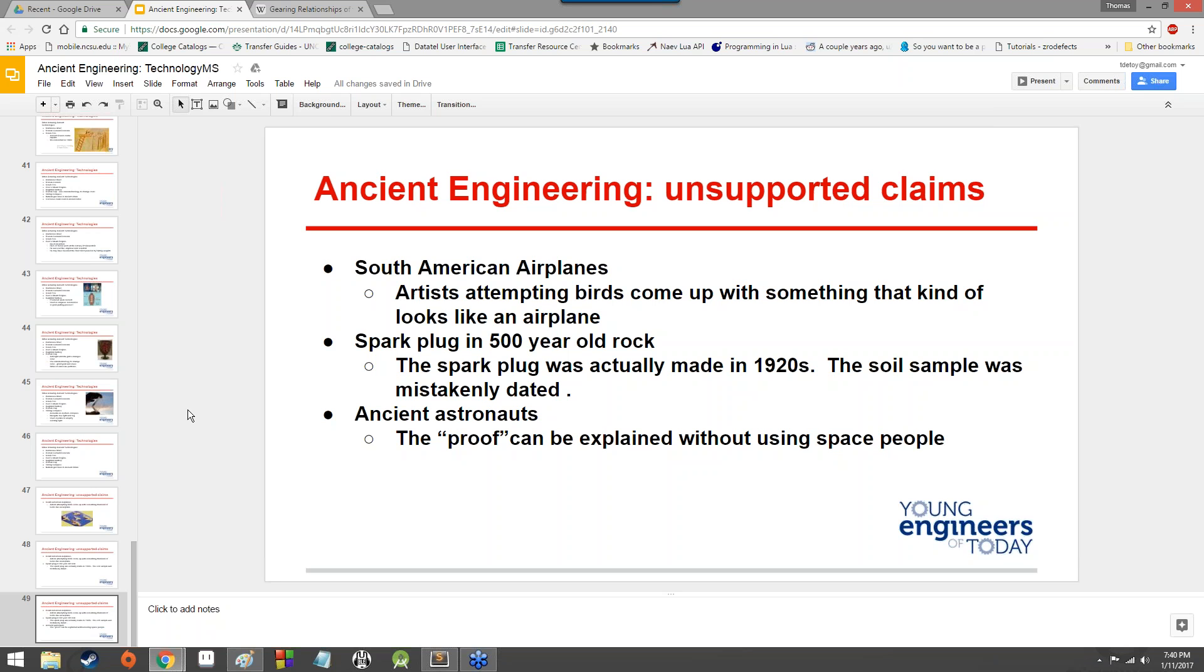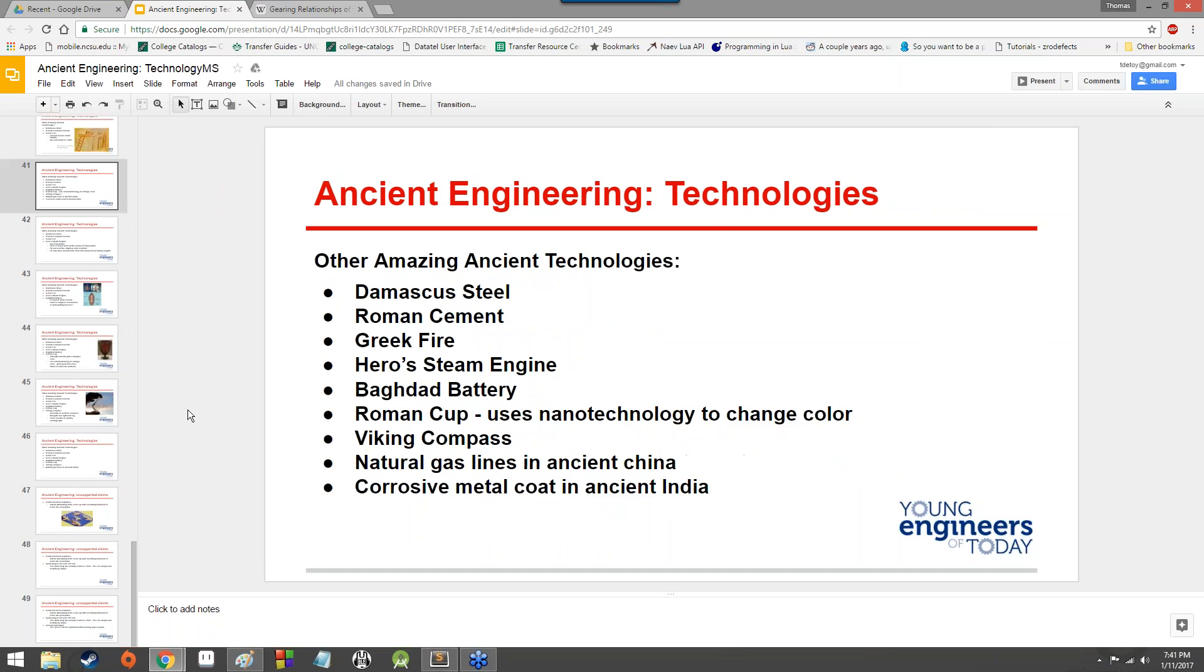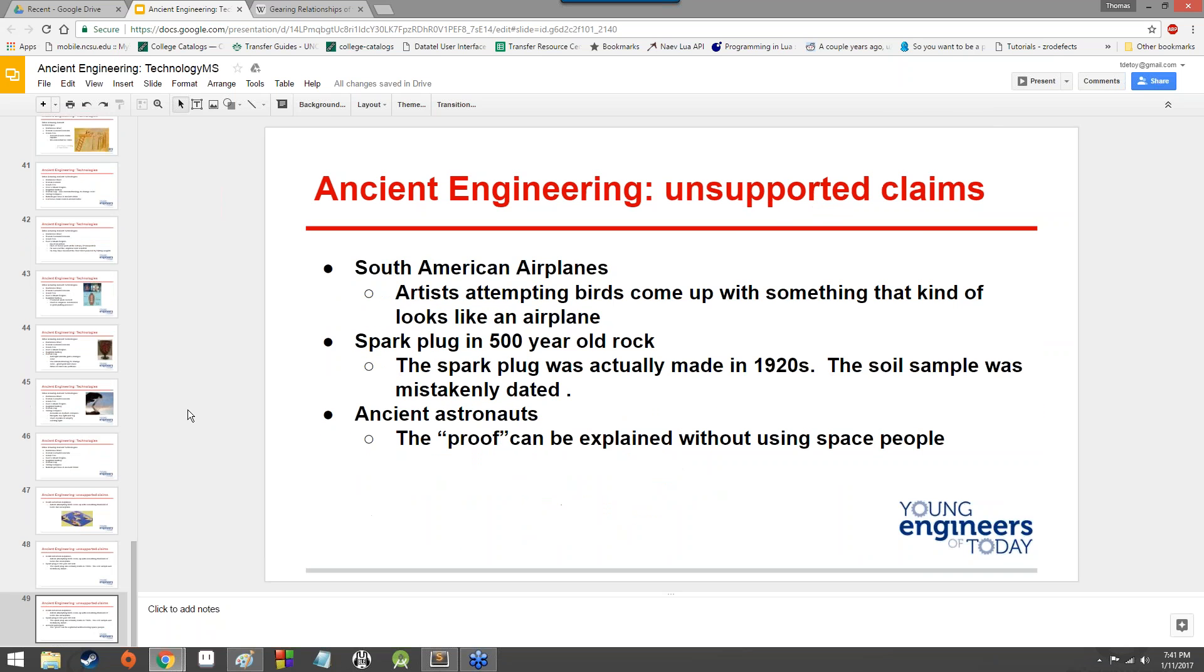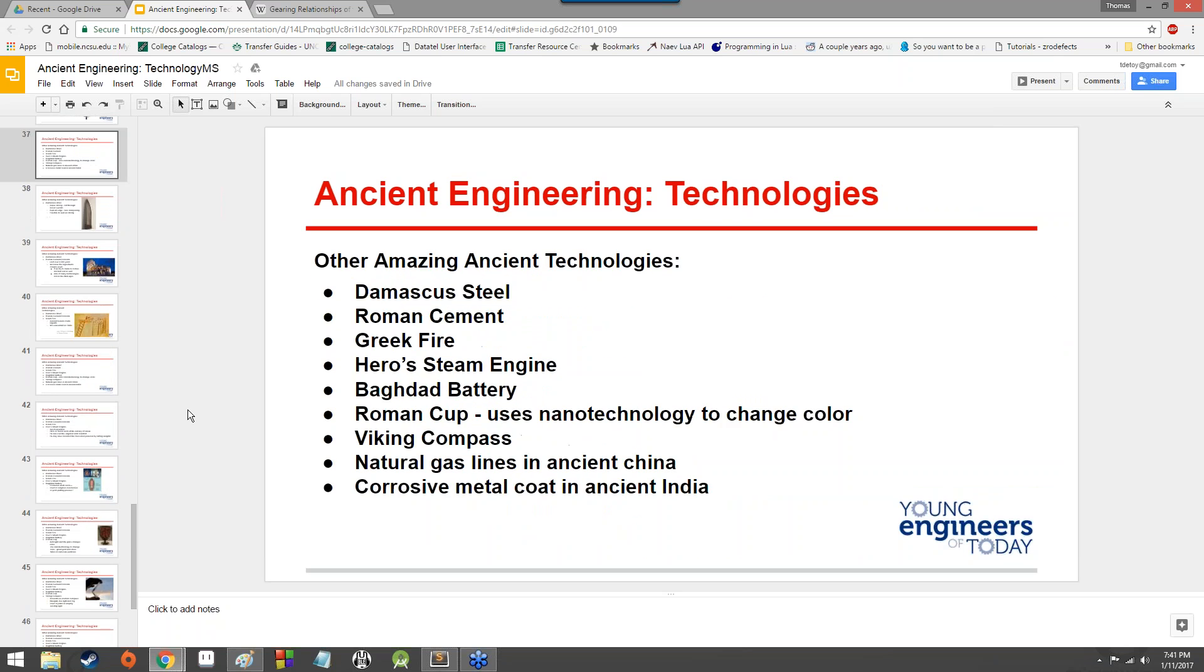And ancient astronauts of course. The proof can be explained without using space people. As fun as it is to think about ancient aliens and things like that, there's really not much evidence out there supporting it. It's more just good old humans being pretty awesome. Because that's the other thing about ancient aliens, saying like oh aliens came and gave us the ability to make electricity or build the pyramids. It kind of discounts what humans are able to do and their ingenuity. I almost think it's kind of more amazing and mind-blowing to think that humans were able to do this stuff just because they were like we're gonna do it, we're gonna figure it out. Yeah, we don't need aliens for that.